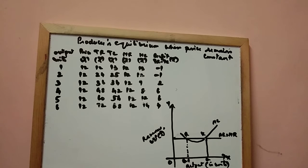So producer's equilibrium will be determined at OQ level of output corresponding to the point K. Because only at point K, the two conditions are met.